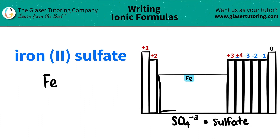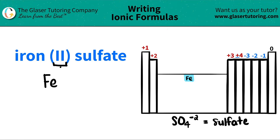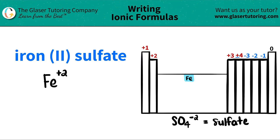For most of the transition metals, your elements are going to have multiple charges. What charge is iron going to be? That's why they gave me this Roman numeral. The Roman numeral is always the charge of the metal. In this case, they told me it's a two, so iron is going to be a plus two. I know it's positive and not negative because all metals are always positive — they love to lose electrons.